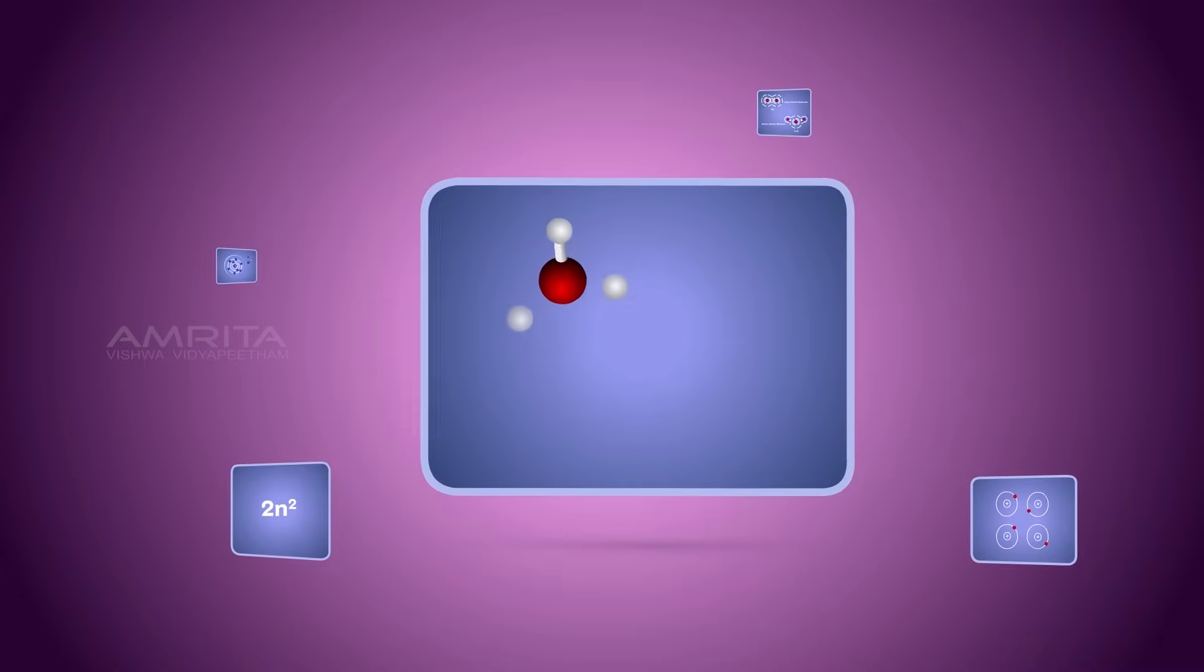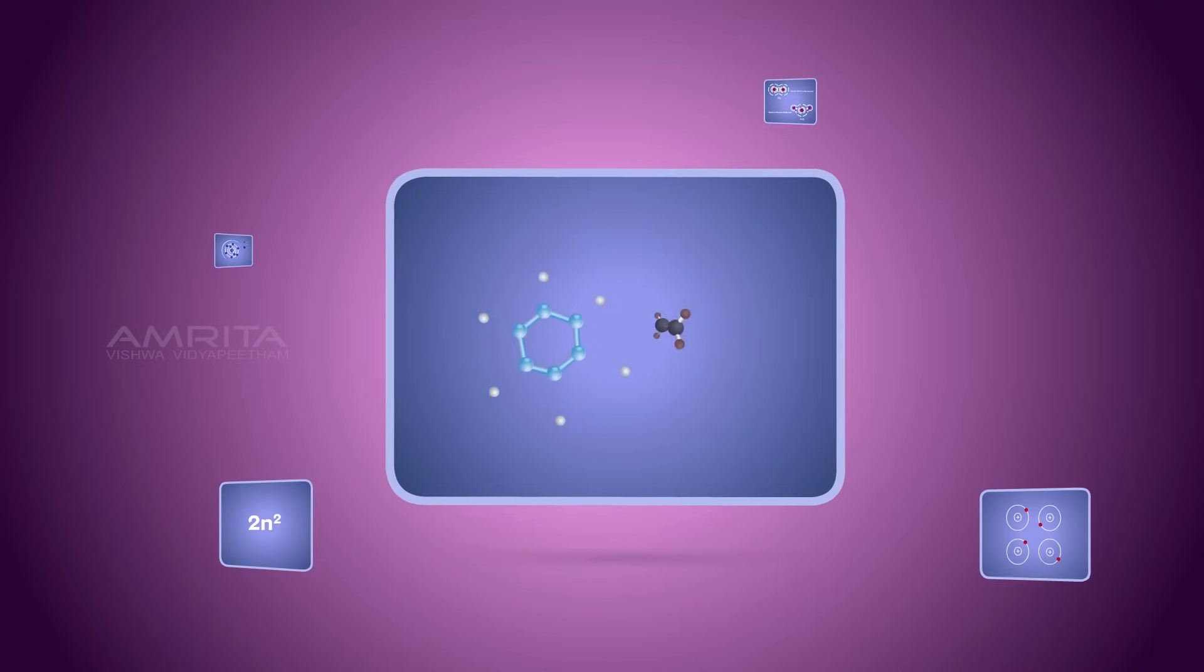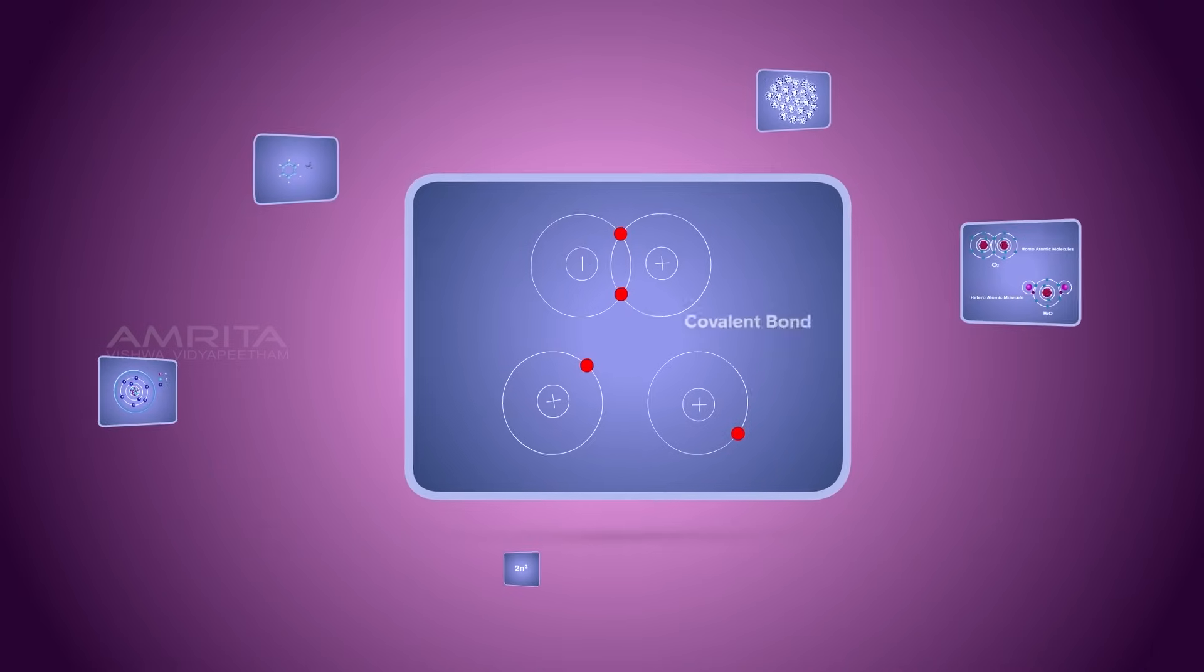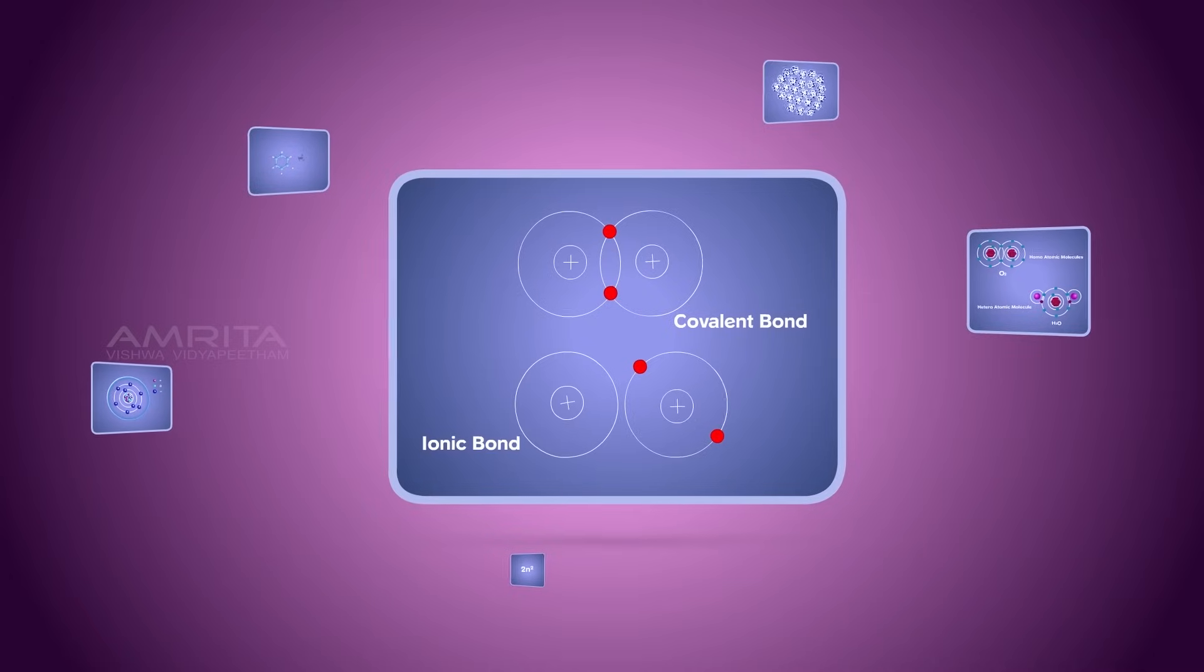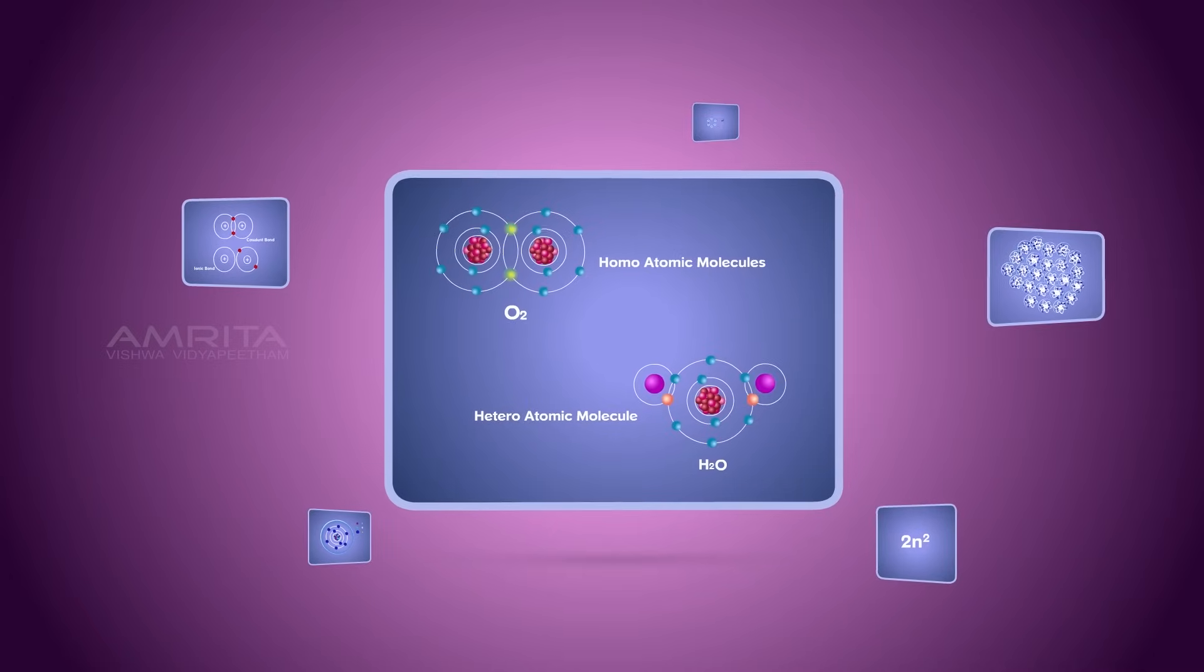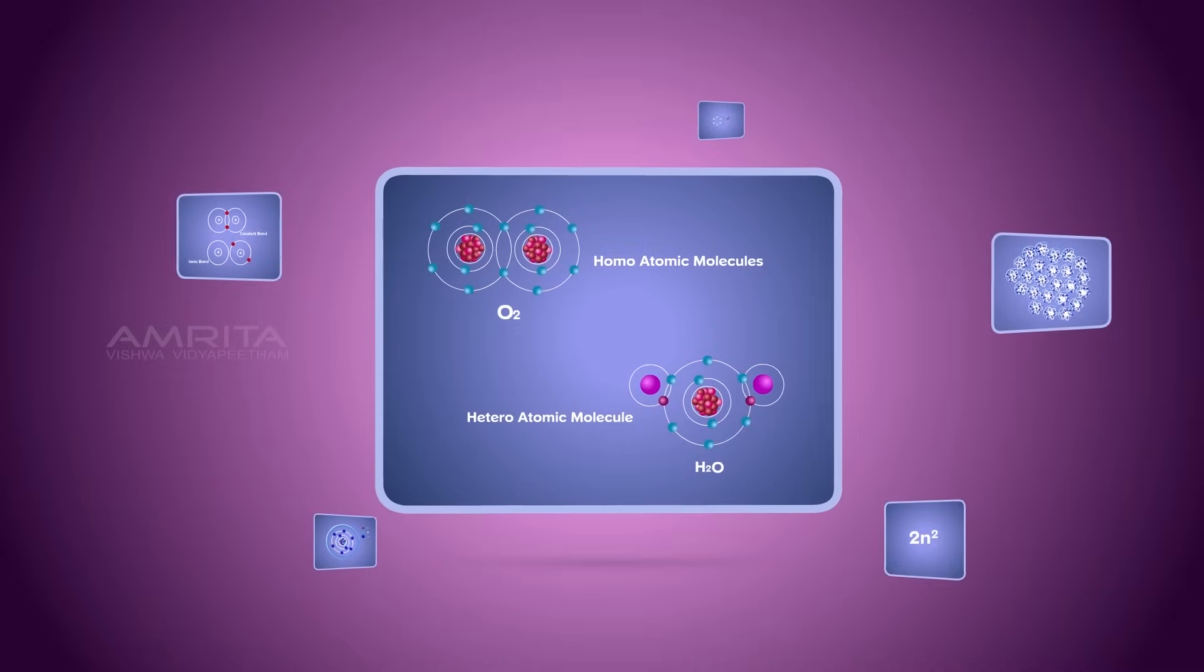A molecule is a chemical bonding of two or more atoms. Bonds are classified as covalent and ionic. There are two types of molecules: homoatomic and heteroatomic.